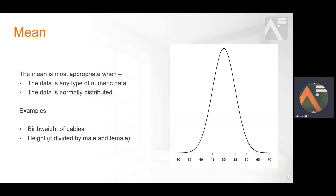The mean is most appropriate to use where the data is any type of numerical data and the data is normally distributed, as in this chart. Some real life examples of normally distributed data include birth weight of babies and height.